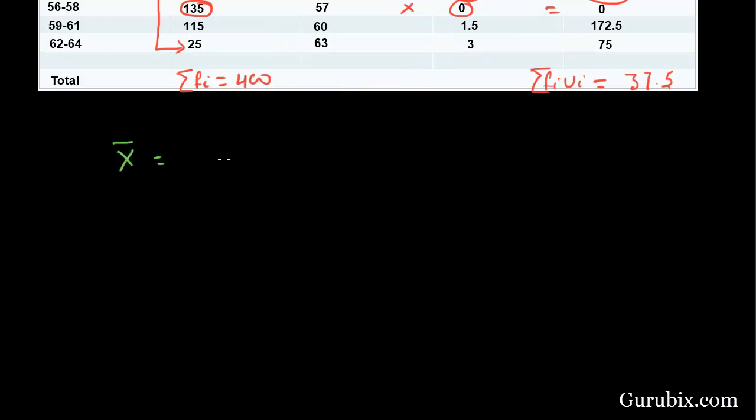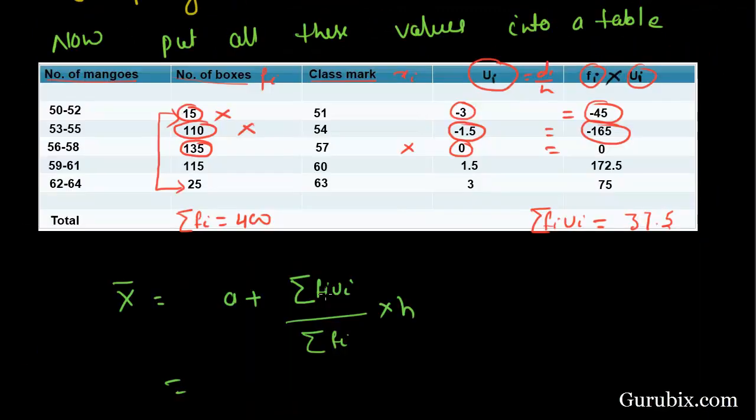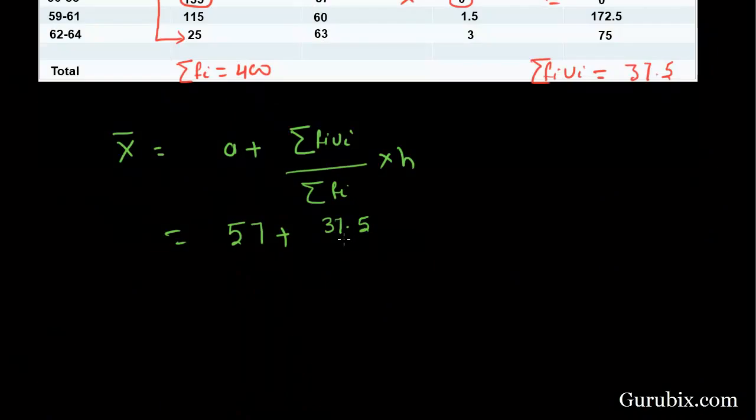Hence, mean by step deviation method is equal to a plus summation of fi ui upon summation of fi into h. This is equal to 57 plus 37.5 divided by 400 into 2. 2 into 200 is 400, so 57 plus 375 divided by 2000 equals 57.1875.